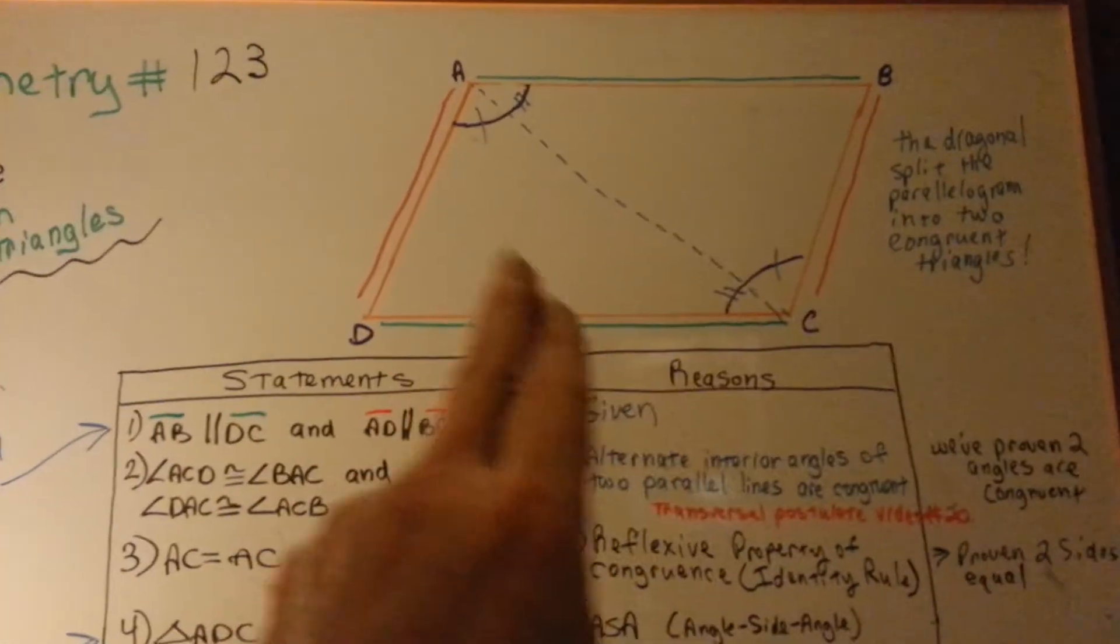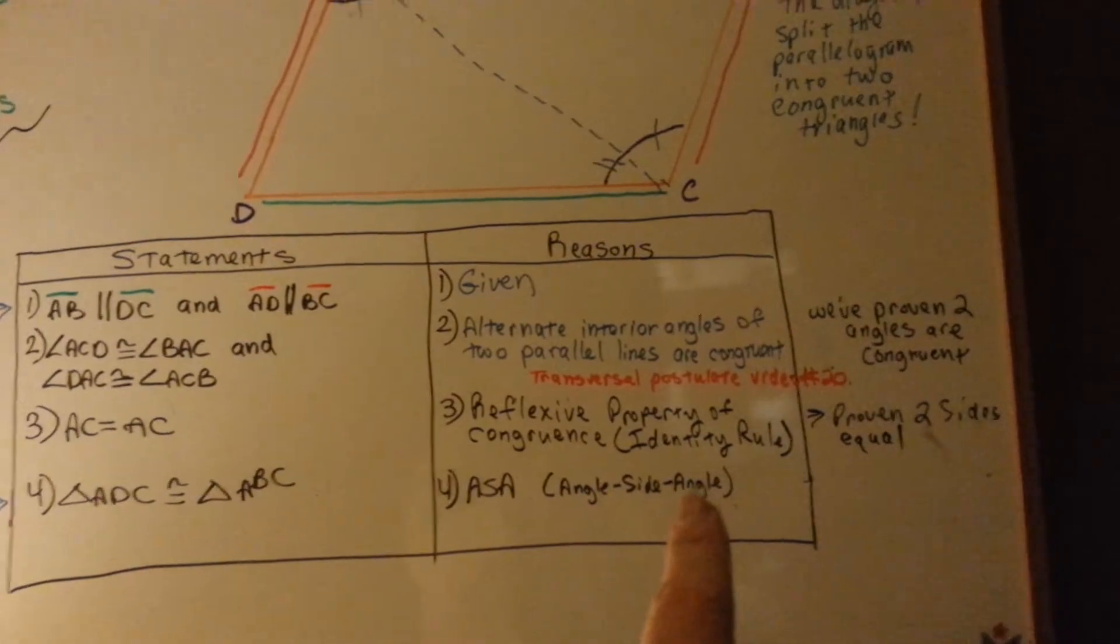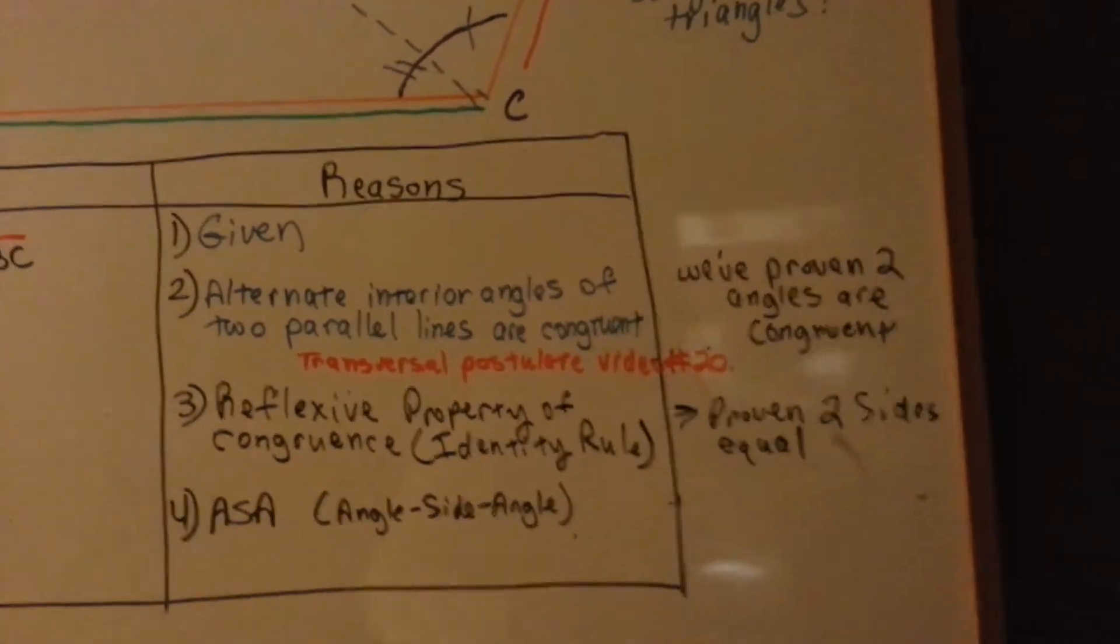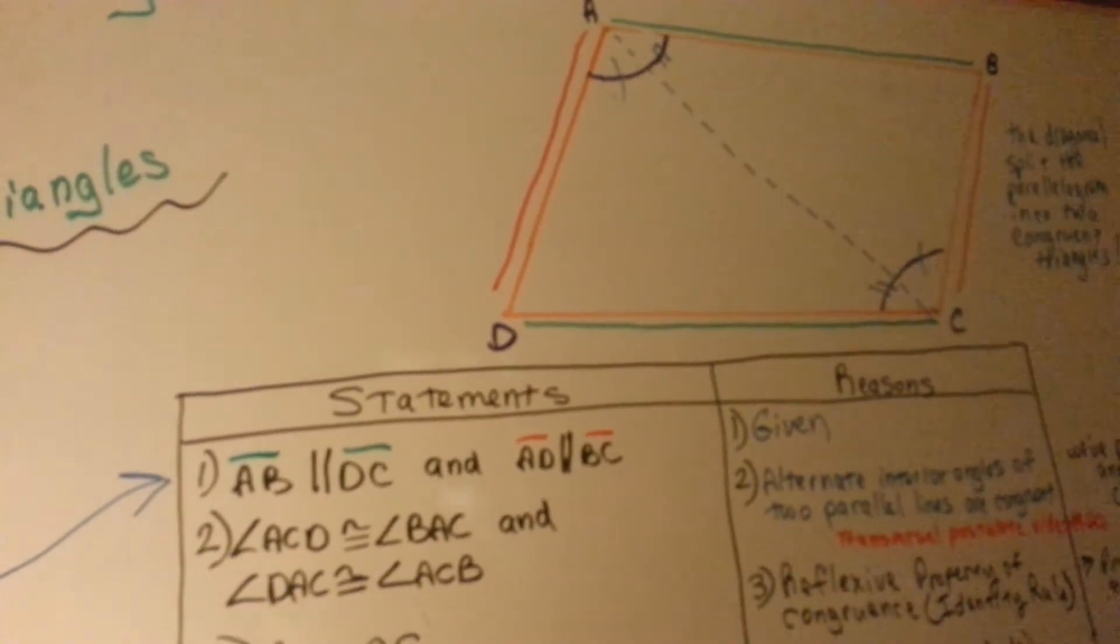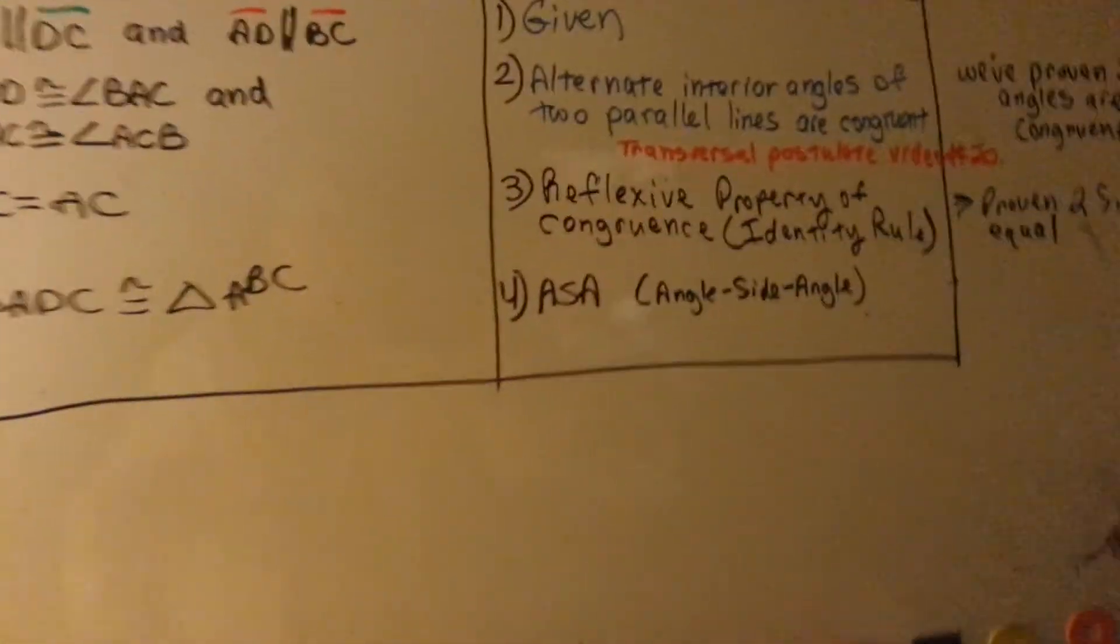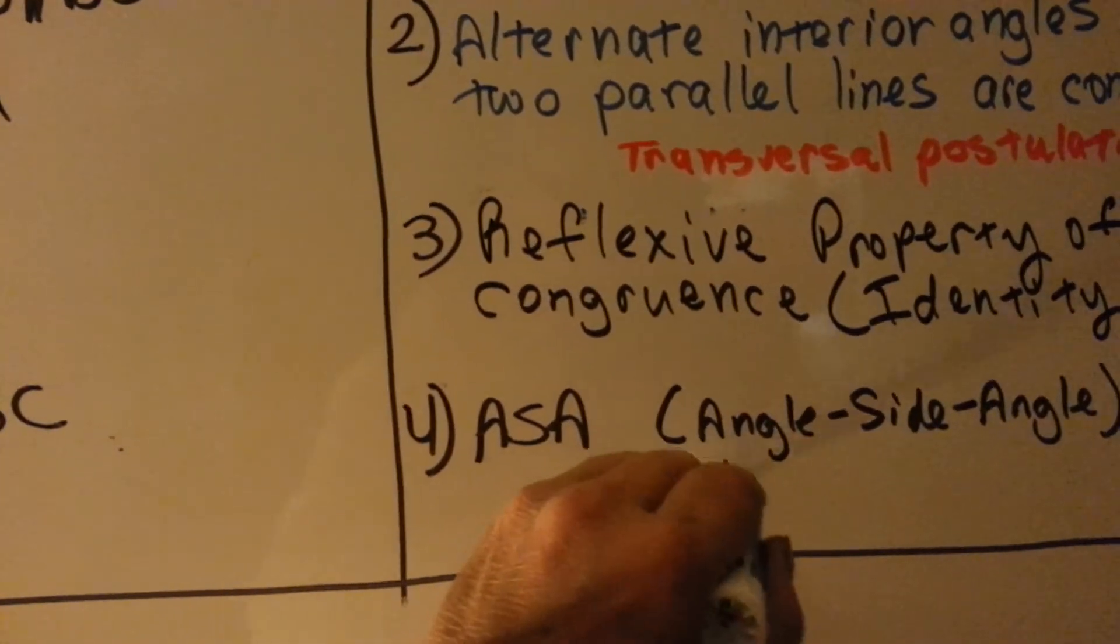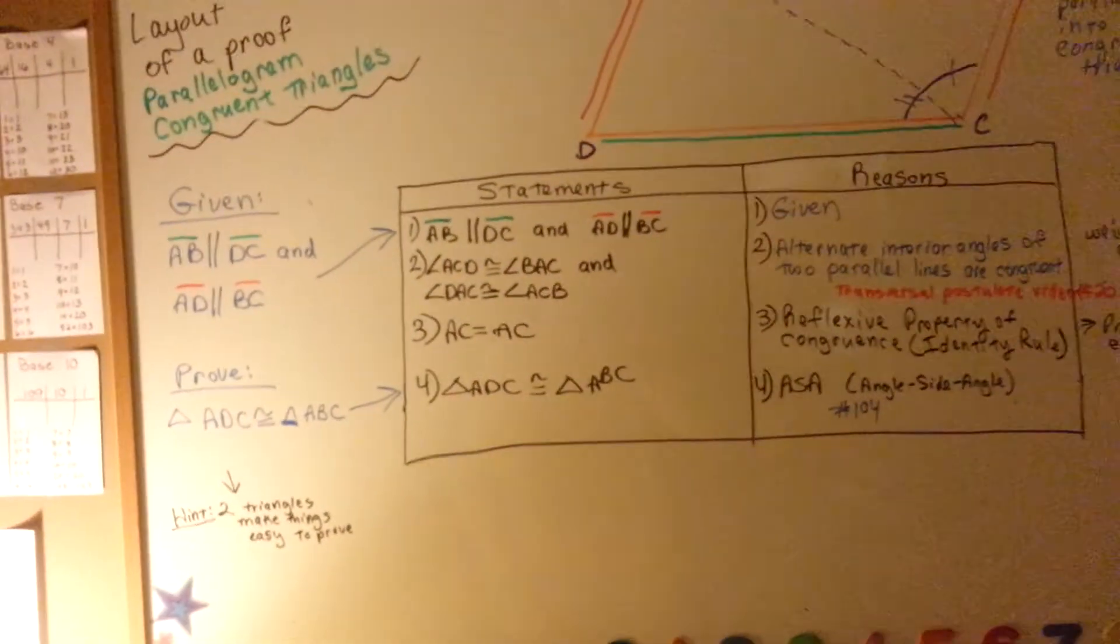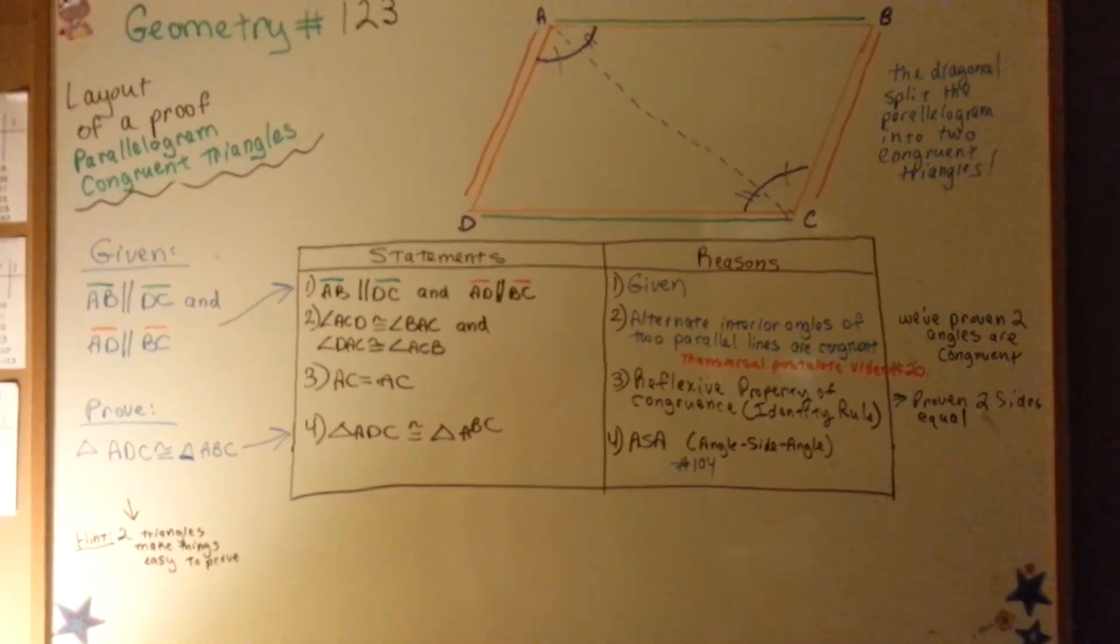Now, we can say that this triangle is congruent to this triangle because of the angle-side-angle rule. So, we've got two angles and a side proven, and we've created the two triangles. If you don't know what the angle-side-angle rule is, you can watch video number 104. I should have had that on here. And that'll tell you about the angle-side-angle rule. So, that is our proof for a parallelogram with congruent triangles.